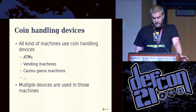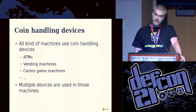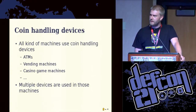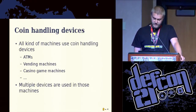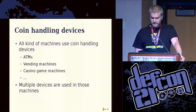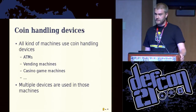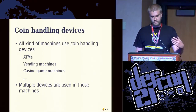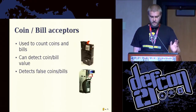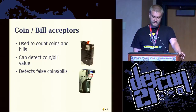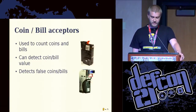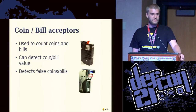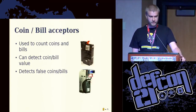Any kind of machines that accept coins or bills are used every day, especially in casinos or in Vegas — like ATMs, vending machines, slot machines, et cetera. There are multiple devices used to process money and give money back. For instance, coin cards, coins and bills. It can also detect if you insert a false coin or a coin from another country.